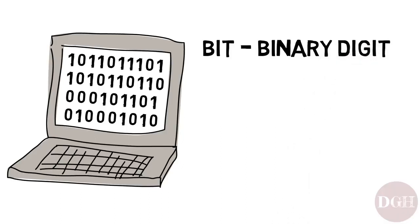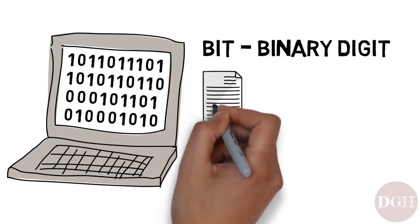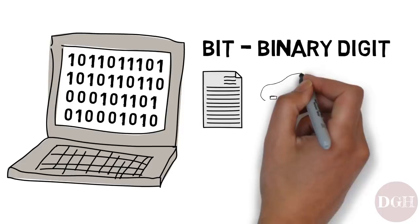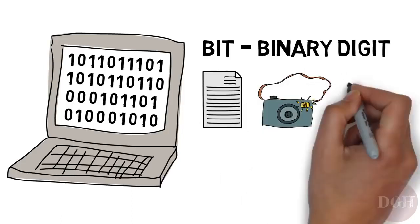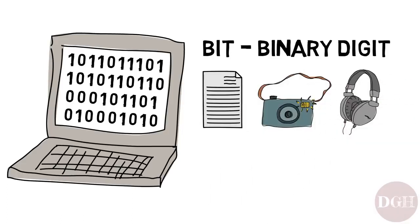Now, these bits — these ones and zeros — are used to store all kinds of information, from the text that appears on your screen, to the colors of an image, to the sounds that come out of your speakers. To store information like this, we use a bunch of bits together.